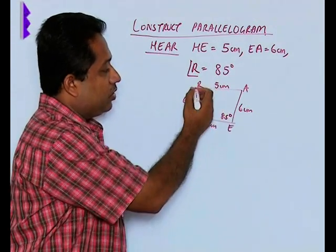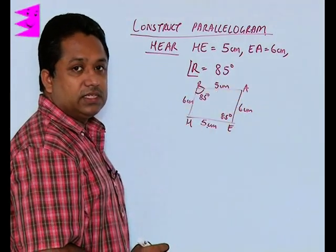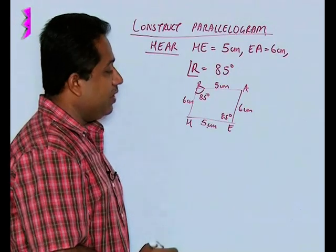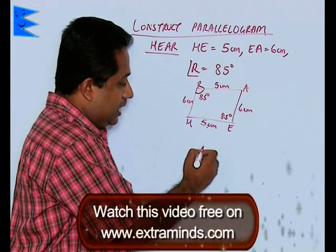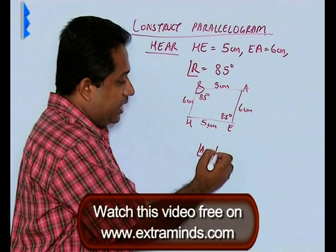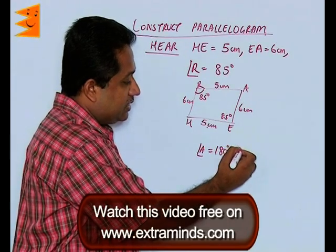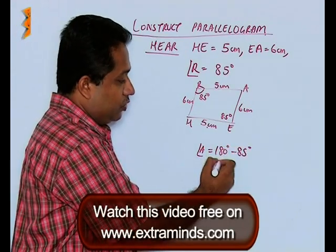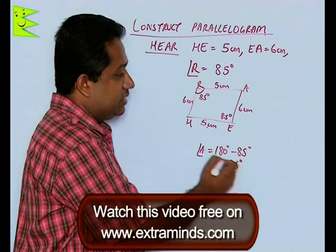Because these are parallel lines, the sum of the co-interior angles add up to 180. So we can say that angle A is 180 minus 85 degrees. Therefore, we can say that angle A is 95 degrees.